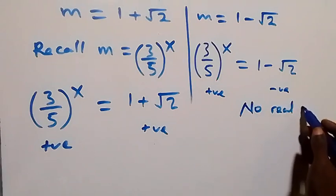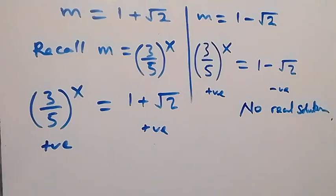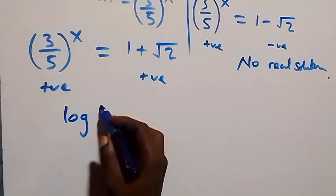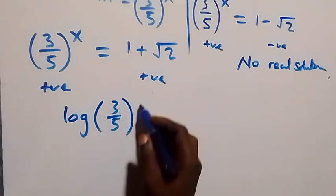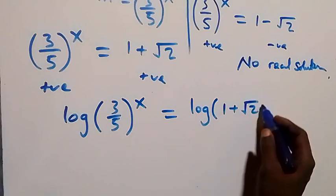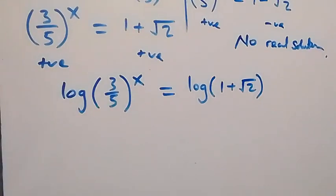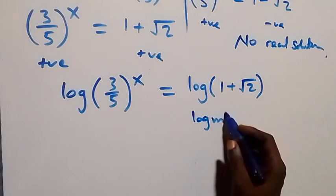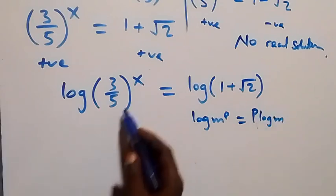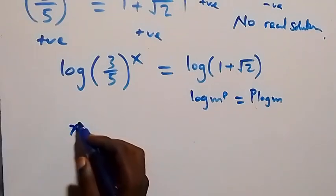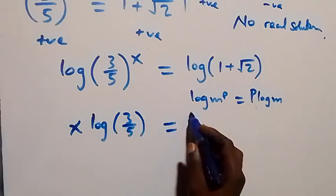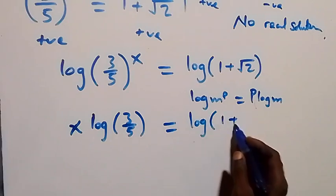Since the right side here is negative, there is no real solution on that side, so we reject it. From the valid equation, we take the log on both sides: log of (3/5) raised to power x equals log of (1 plus root 2). By the log power rule — log m to power p equals p times log m — the power x comes down, giving x times log(3/5) equals log(1 plus root 2).